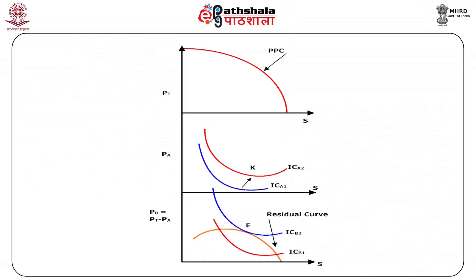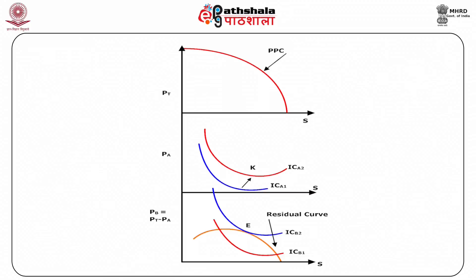Corresponding to E, Mr. A will choose a point like K on his indifference curve as the point of consumption, K being exactly vertical to E. It is important to note here that both A as well as B will be consuming the same amount of public good. In the case of private good, it will not be so.